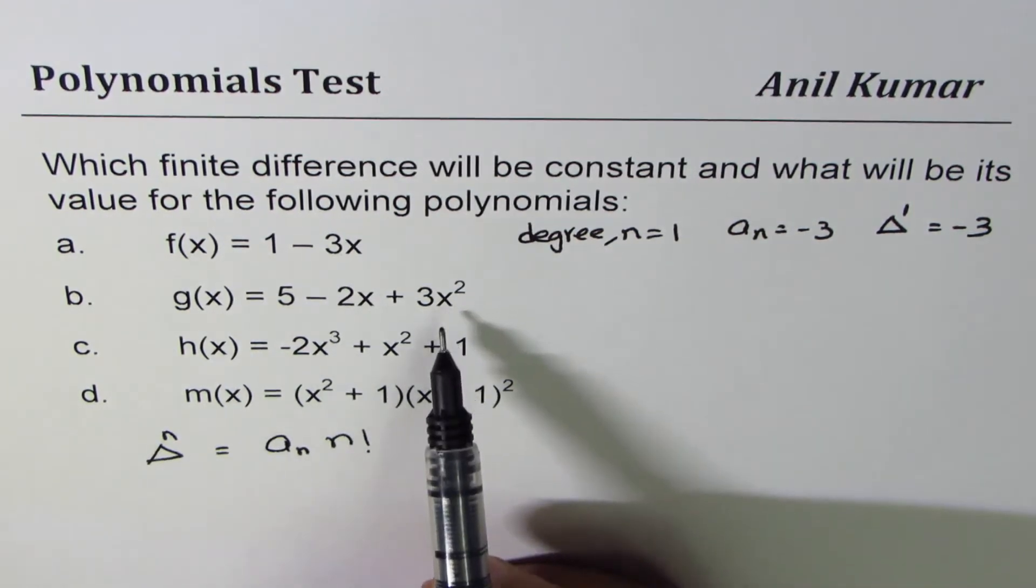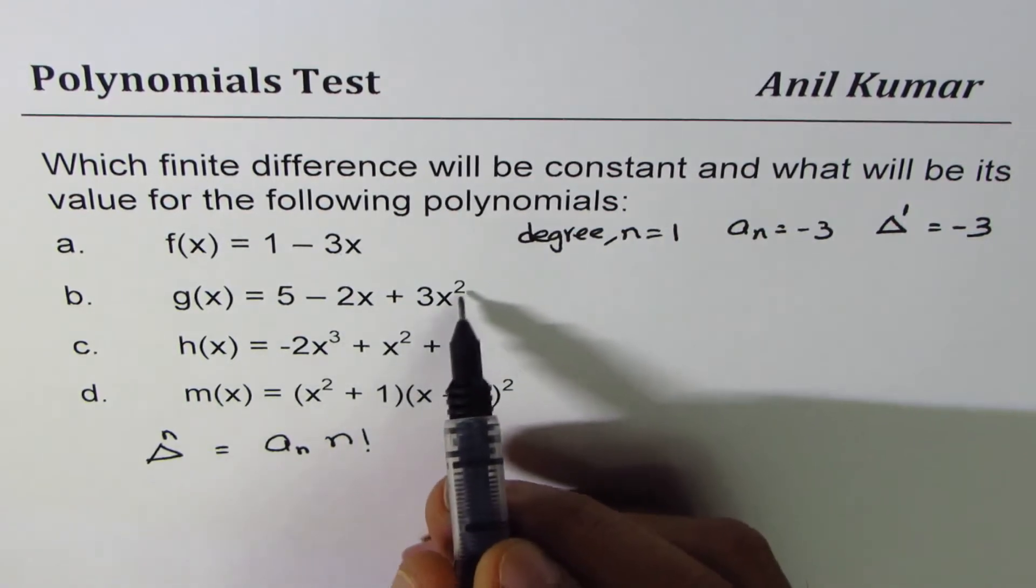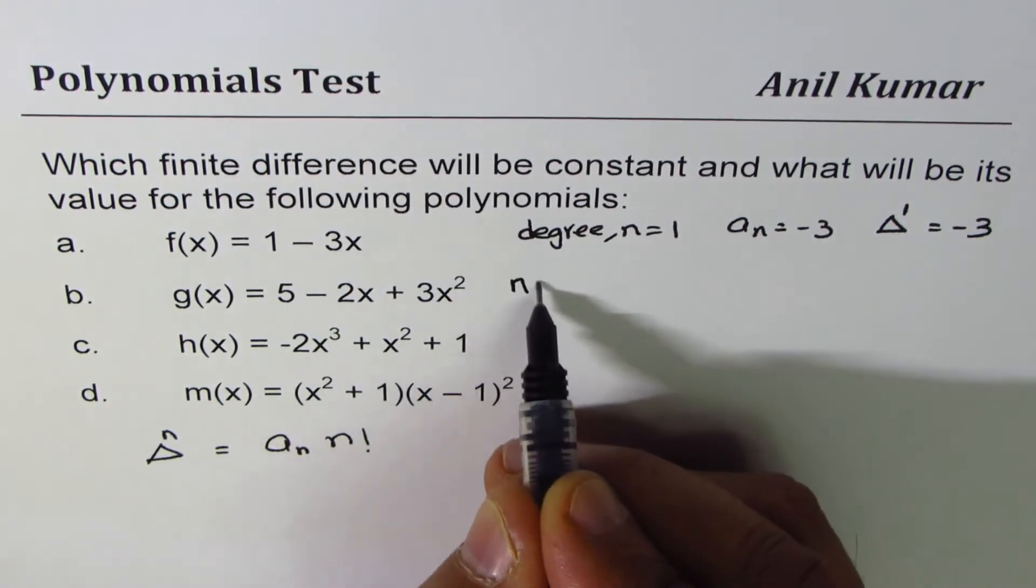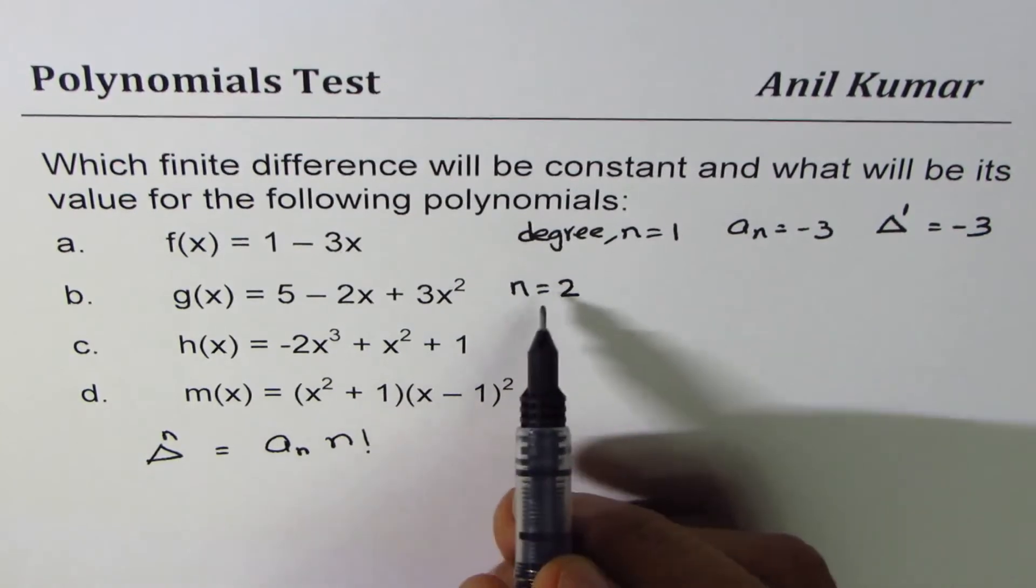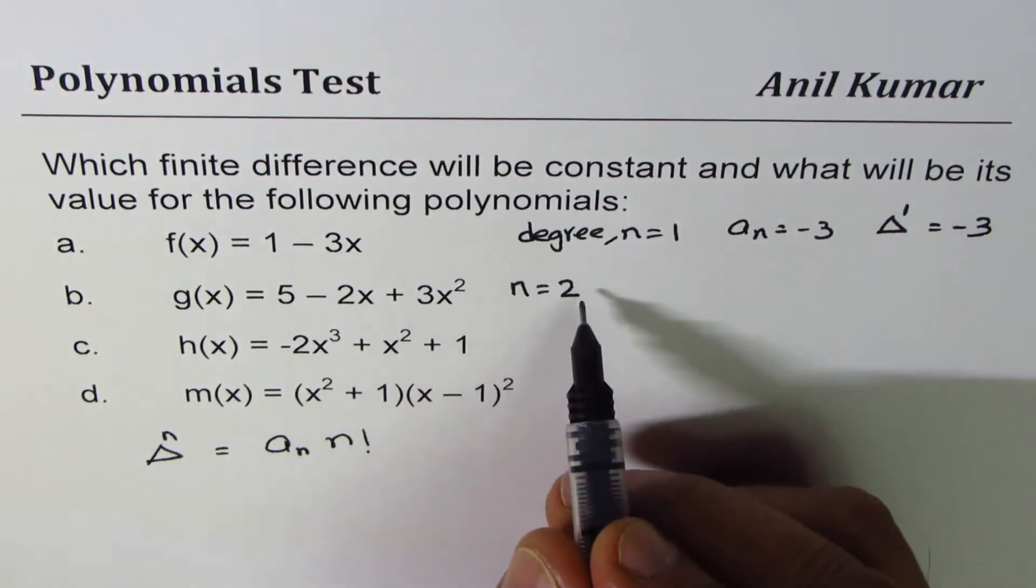Let's get into the next one, which is quadratic equation. So the degree is 2. So let me write down n as equals to 2. Since n is 2, we know second finite difference will be constant.